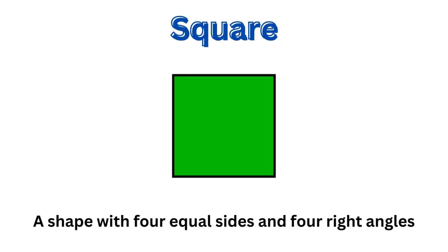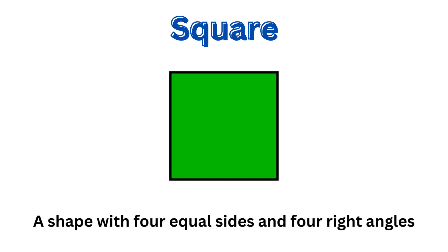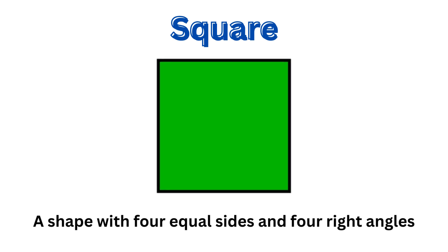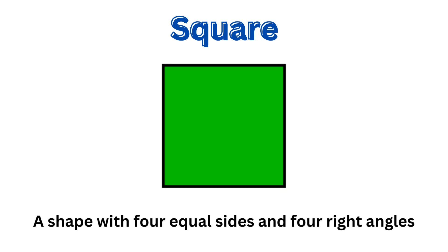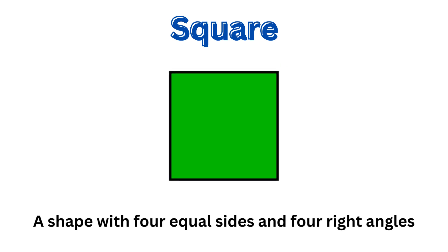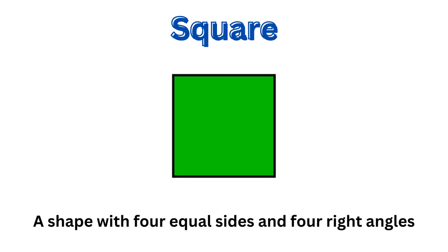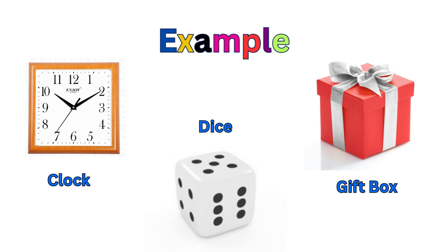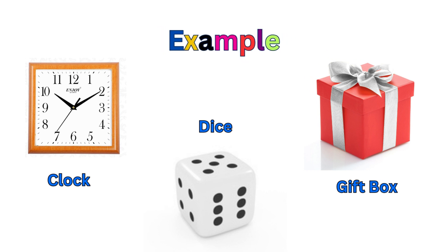This shape is a square — a shape with 4 equal sides and 4 right angles. Examples are a clock, dice, and a gift box.